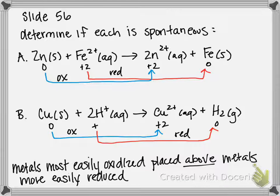So in reaction A, zinc is oxidized and iron is reduced. So basically, what we need to determine is: is zinc above iron in the activity series? If it is, this reaction will occur spontaneously without any outside help, because zinc is more easily oxidized than iron.